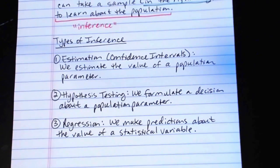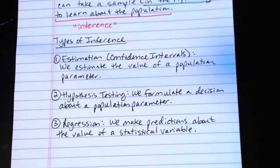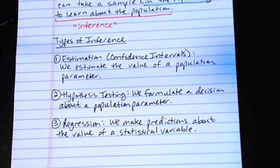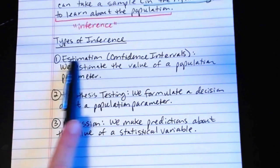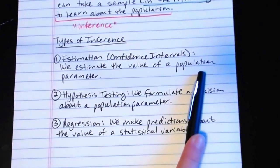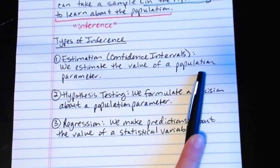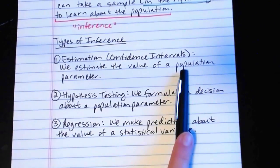So to give you just a brief example of each type of inference and how it might be used, let's say what I was interested in is what is the president's current approval rating? Okay, so obviously I'm not going to poll every single individual in the United States. I'm going to take a representative sample. And then in that sample, I might find what the president's approval rating is just within the sample and then use estimation to estimate what the value of the president's approval rating is in the larger population. Okay, that would be an example of estimation.